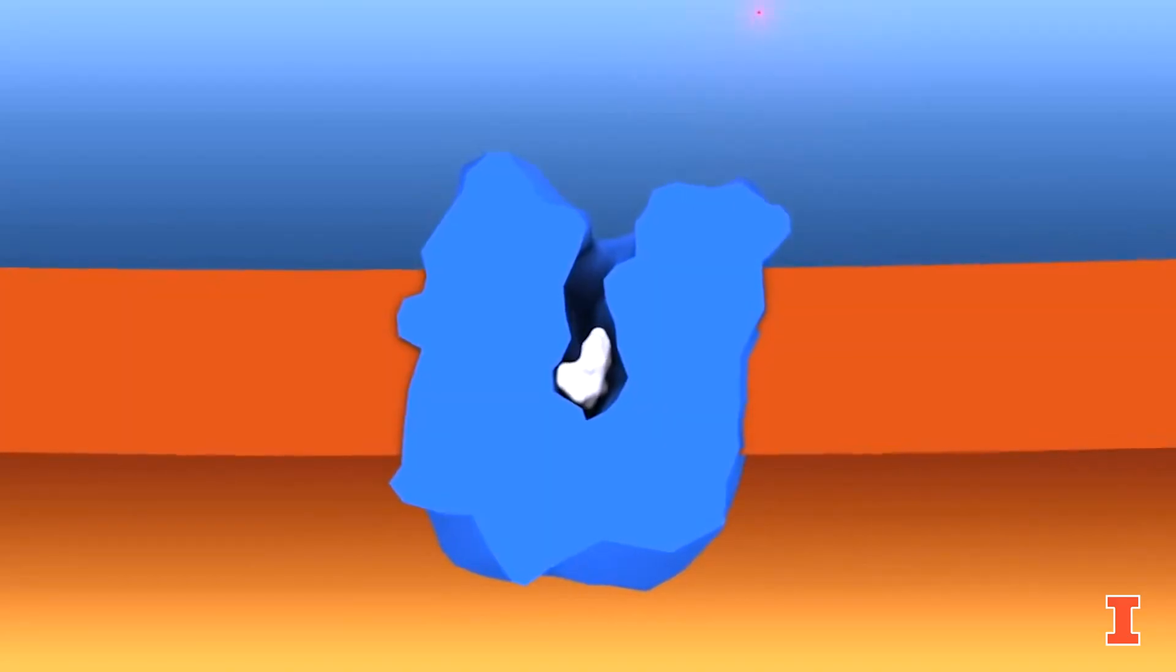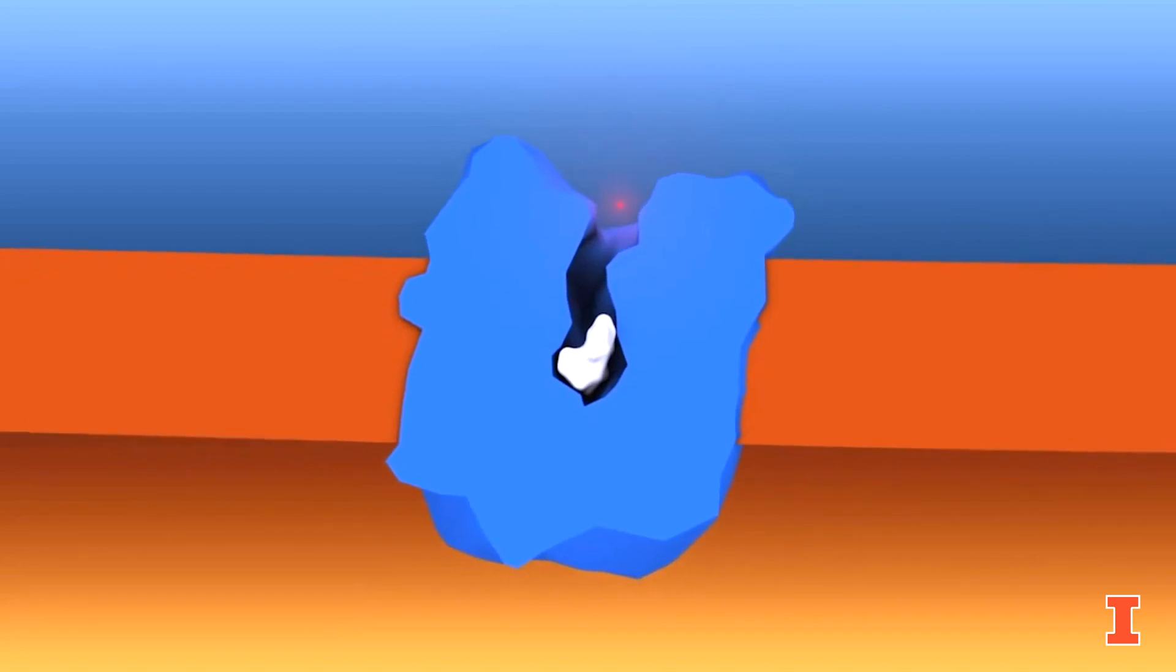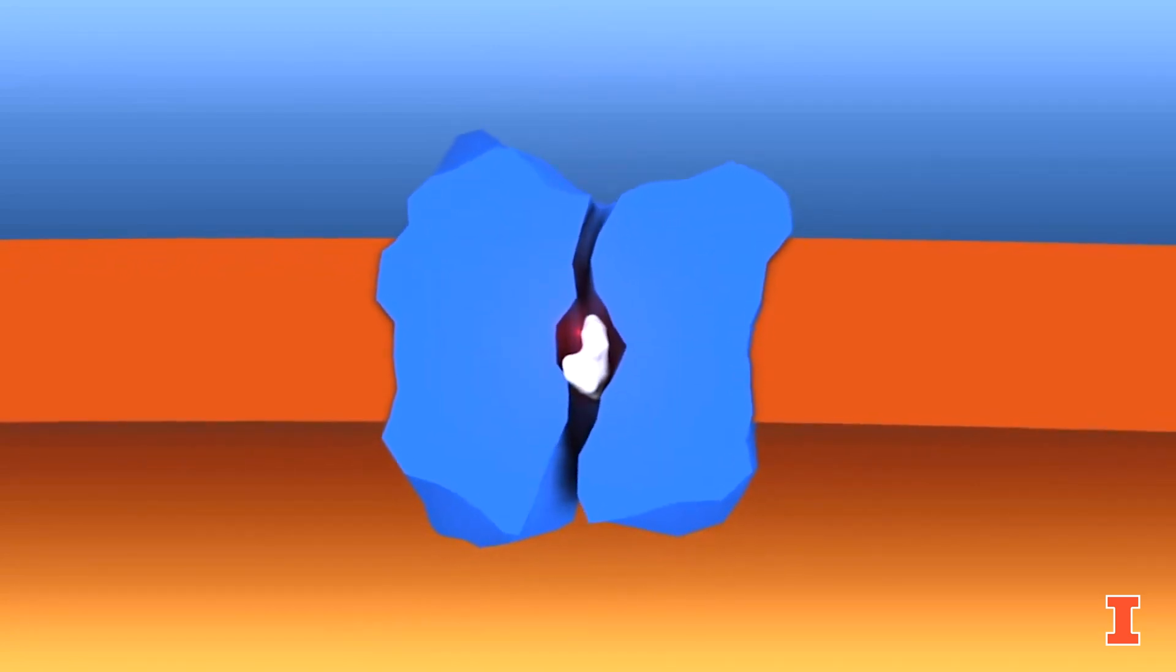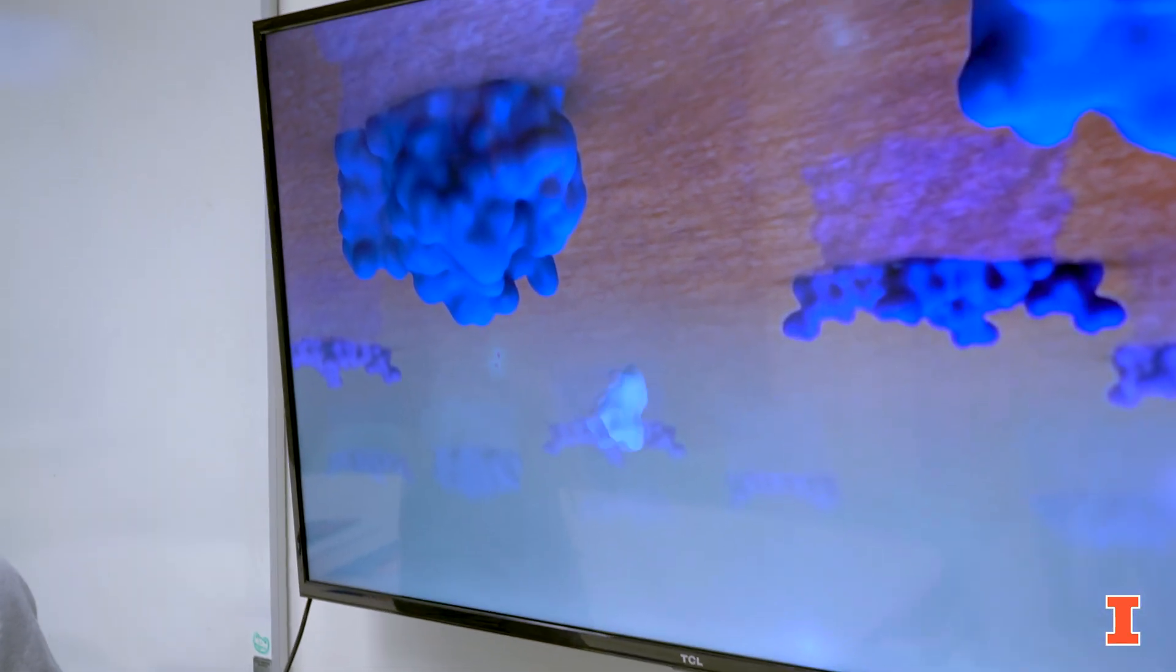Typically they bind in this pocket and usually some sort of counter ion also comes in as well. This will trigger a conformational transition to where it kind of closes from the outside and opens on the inside to allow it to re-release inside the cell. This is one of the main ideas in which we simulate our proteins.